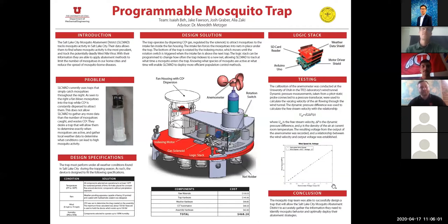The total cost for the trap comes to $468 for raw materials that the Mosquito Abatement District will need to purchase, with additional labor for laser cutting and 3D printing needed on their end.